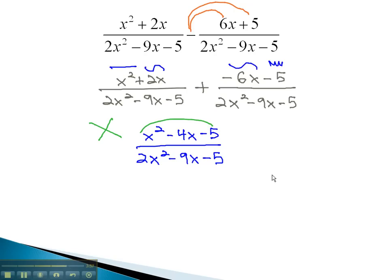Multiplying to negative 5 and adding to negative 4, we have negative 5 and positive 1. Because of the 1 in front of x squared, we can factor this to x minus 5 times x plus 1.